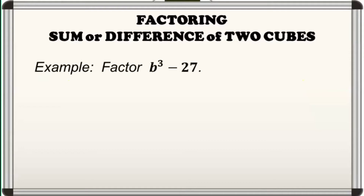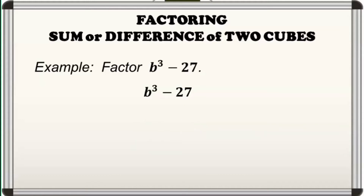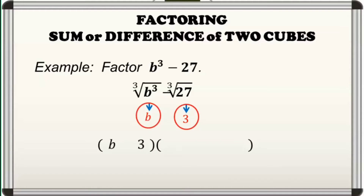For our second example, we factor out b cubed minus 27. This time, ito ay isang difference of two cubes, since b cubed is equal to the cube of b, 27 is equal to the cube of 3, and they are separated by a minus sign. So, we now begin to factor out this one. Ang cube roots ng first and second terms ay b and 3, respectively. So, to form our binomial and trinomial factor, gagamitin natin itong cube roots na nakuha natin. For our binomial factor, we have b and 3, separated by a minus sign, since we have a difference of two cubes.